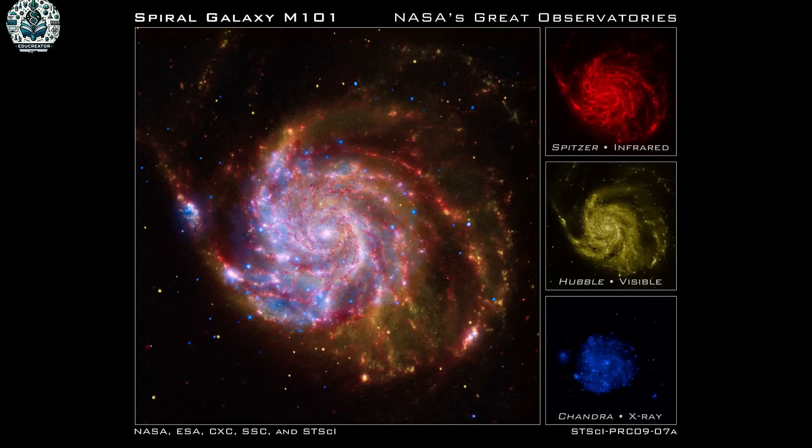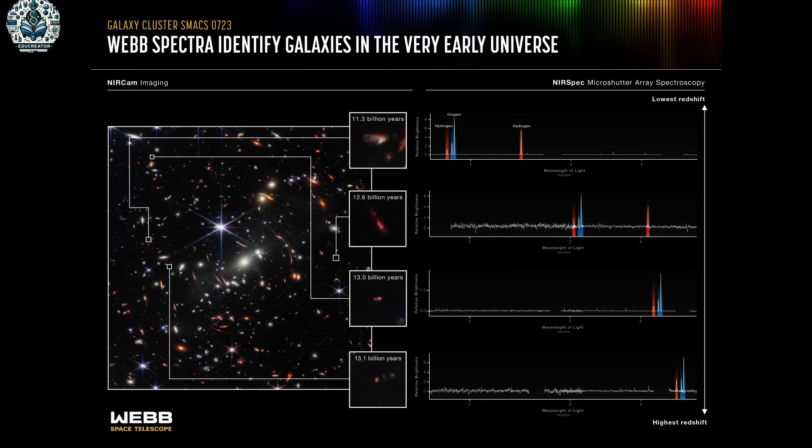Then there are things like spectral analysis. Telescopes can figure out the exact type of light an object emits. This tells us about the object's composition, temperature, and even how it is moving. It's a bit like identifying a musical note to learn about the instrument playing it.